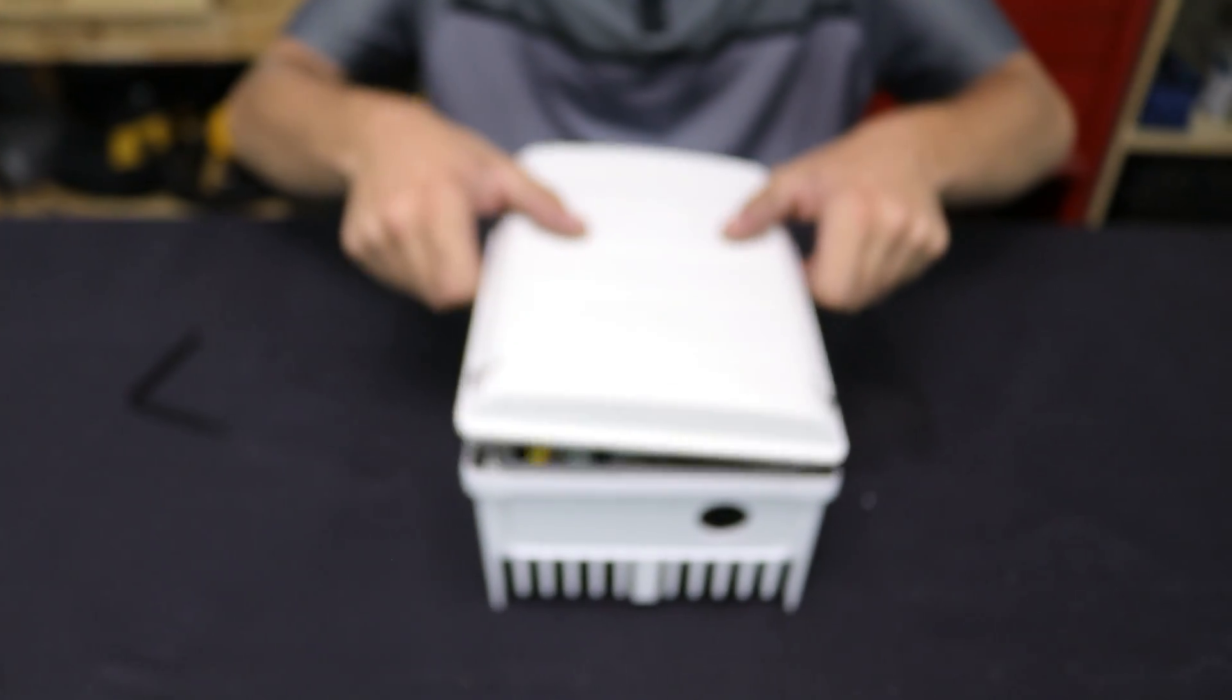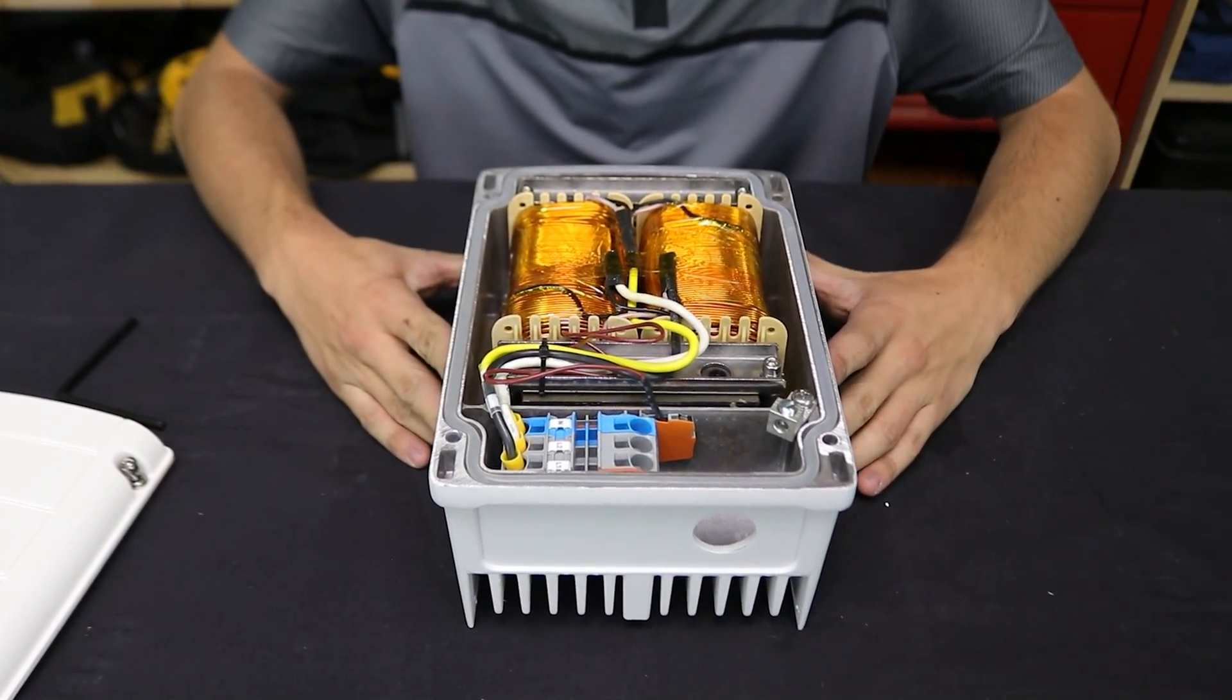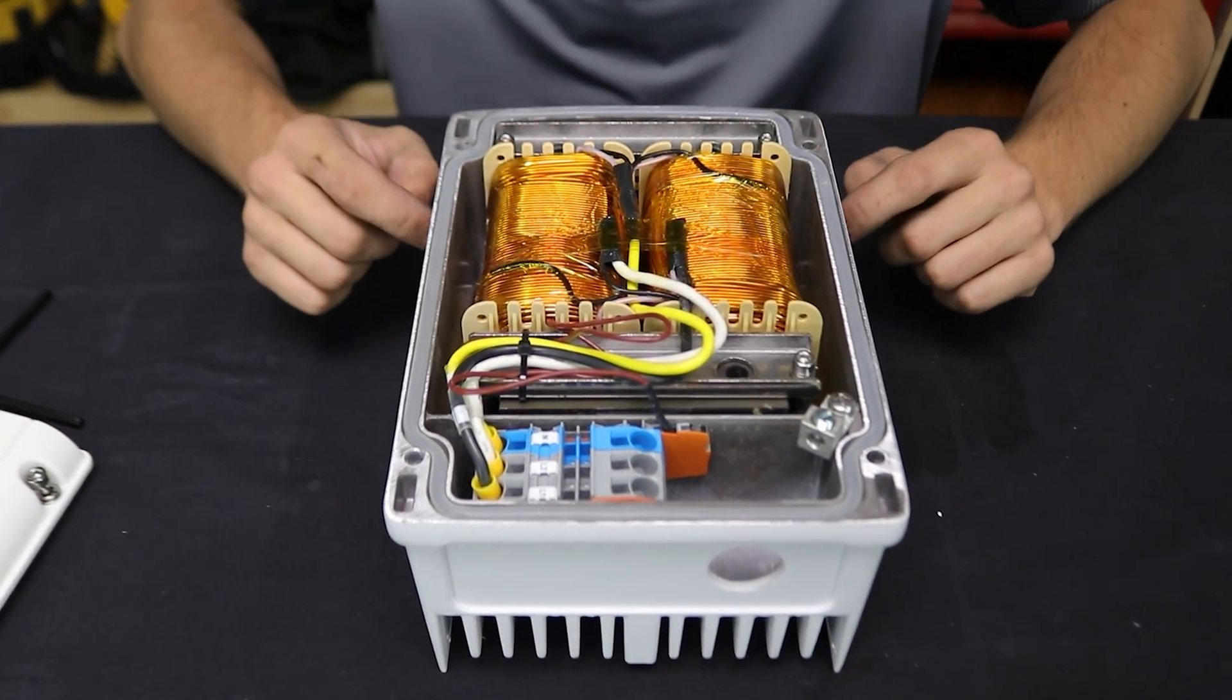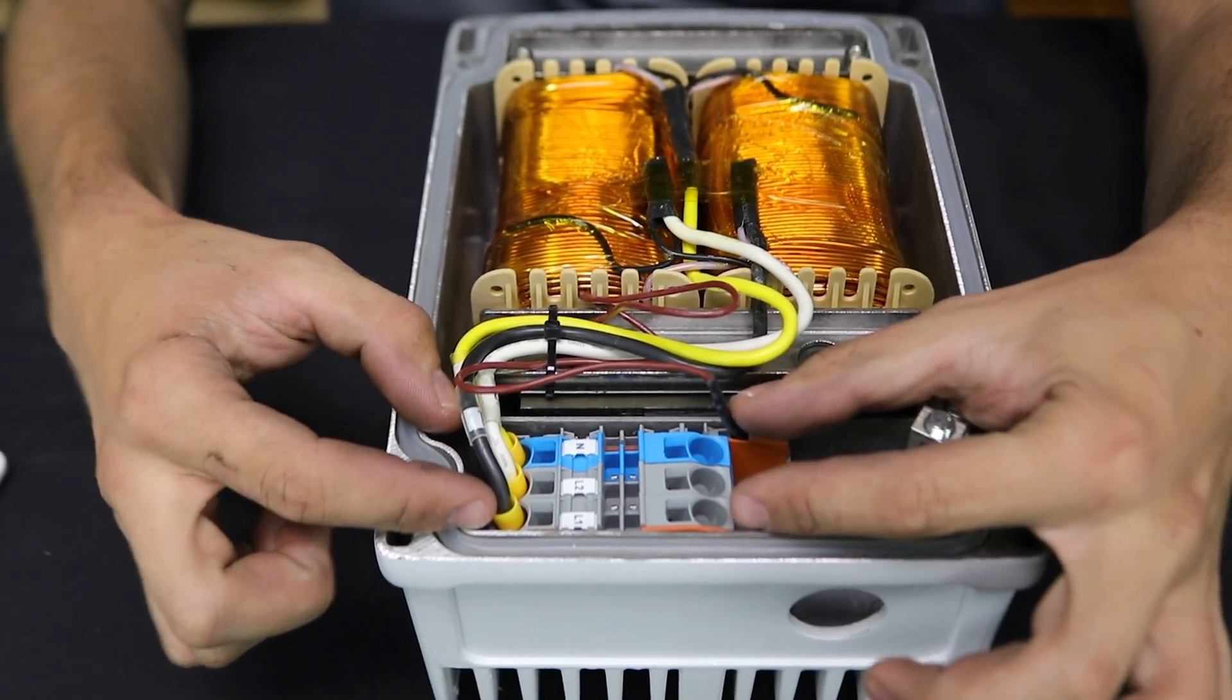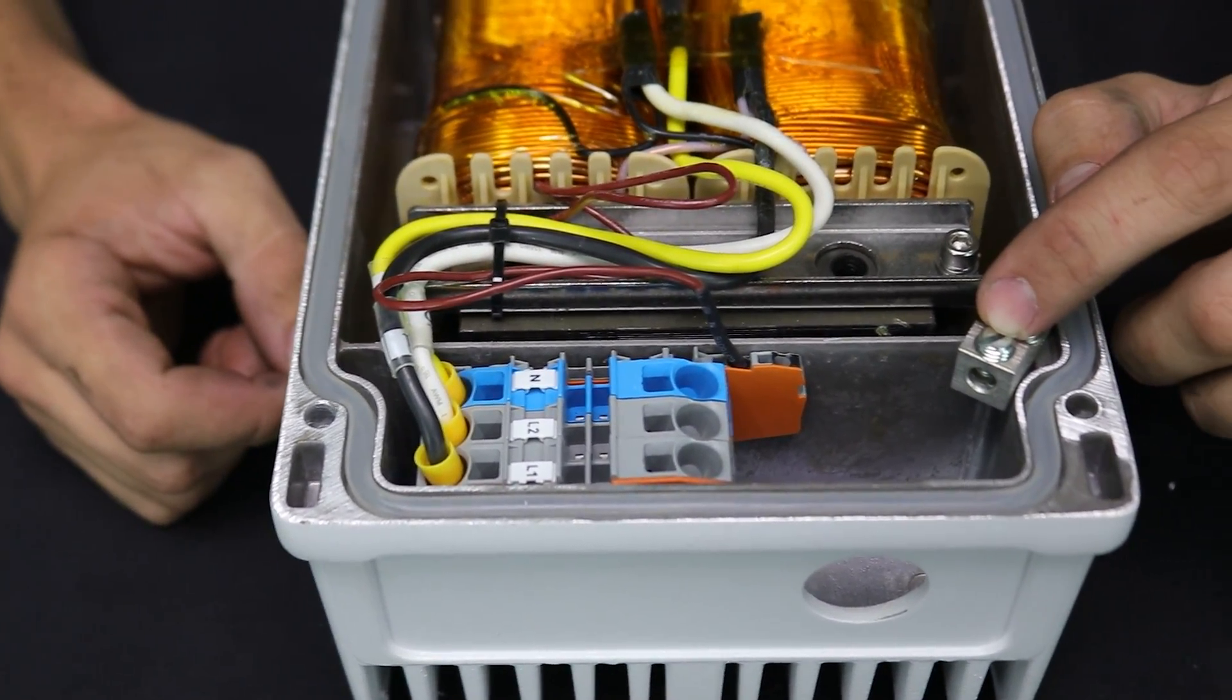So I've already loosened the screws and if we look inside, it is actually quite interesting. Let's start with there is a weatherproof seal around the outside and there is a transformer winding as well as a terminal block at the bottom. We also have a ground terminal over here on the side.